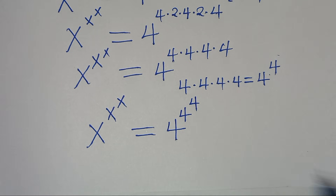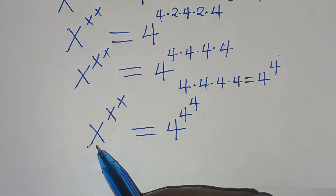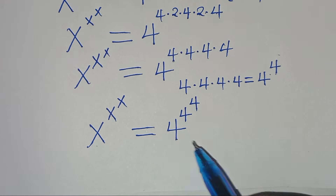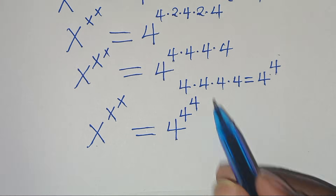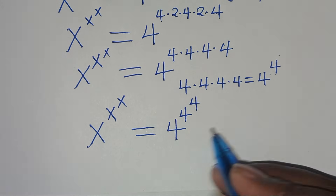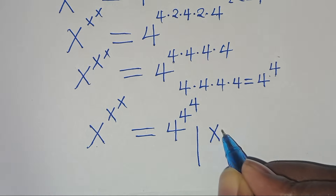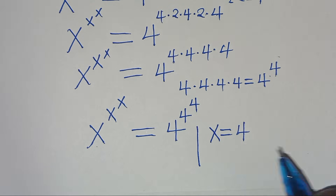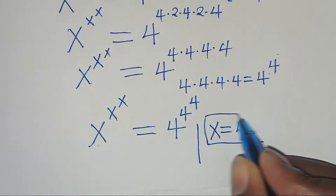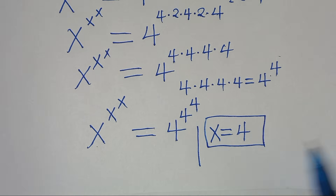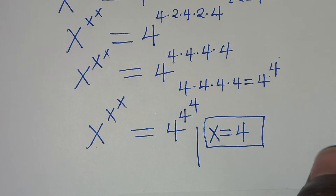Clearly we have a pattern: x^(x^x) = 4^(4^4), which implies that the value of x is equal to 4. This is the solution to the algebra problem.